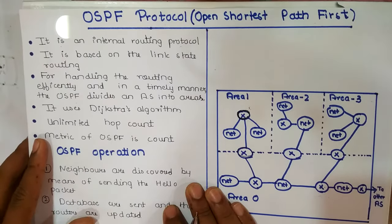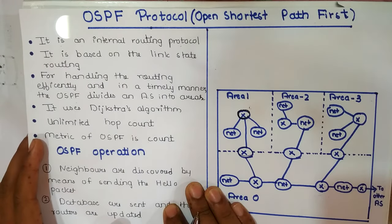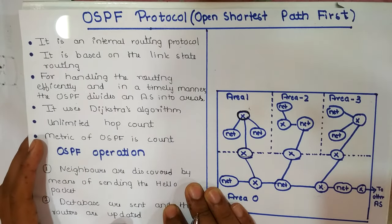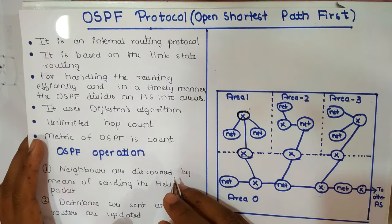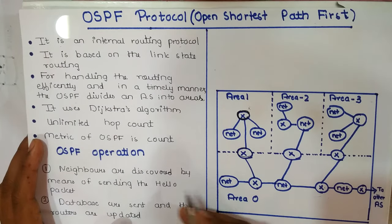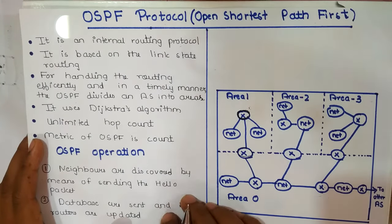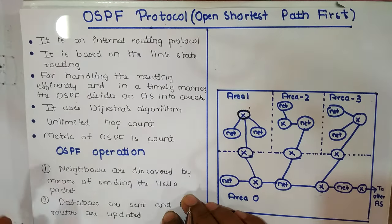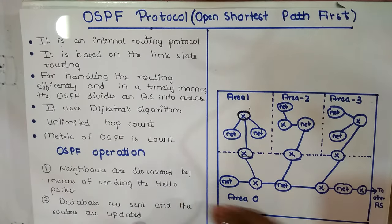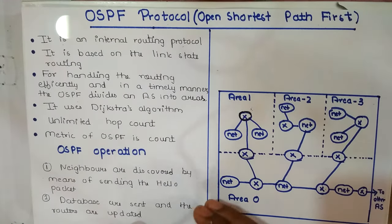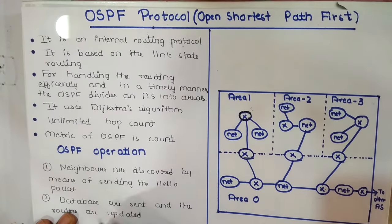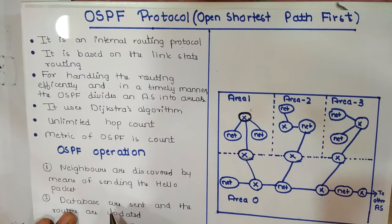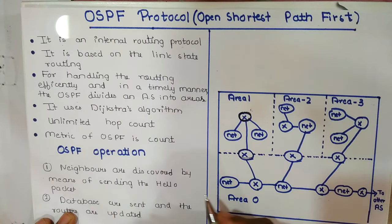Now let's look at the operations performed in OSPF. First, in order to discover neighbors, the router sends a hello packet. The hello packet is sent to the neighboring router, and the neighbors then respond to it. After discovering the neighbor, the router sends its database to its neighboring router.